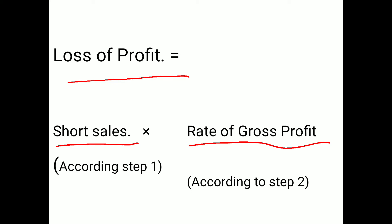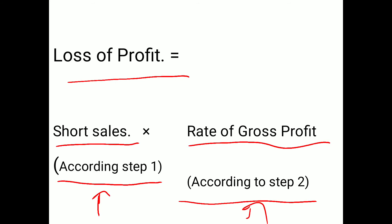Two amounts are required: Short Sales from Step One, and Rate of Gross Profit from Step Two. By multiplying these two amounts, we receive the loss of profit.